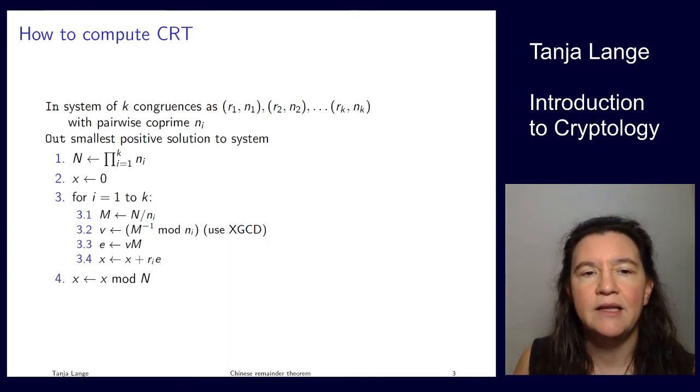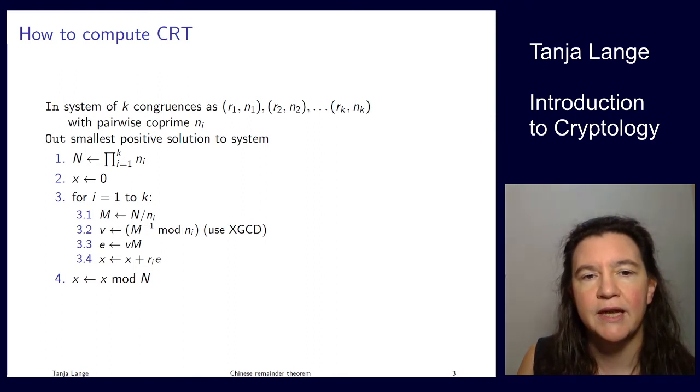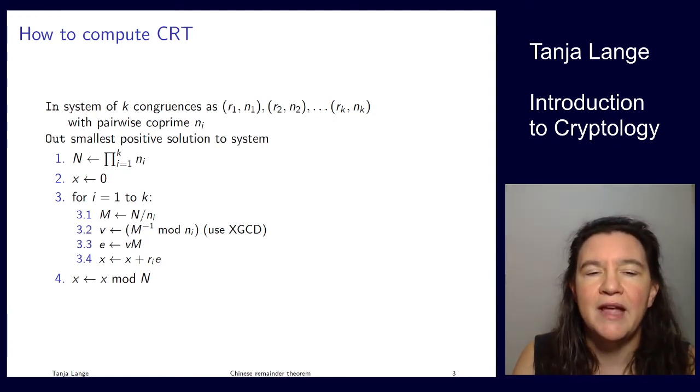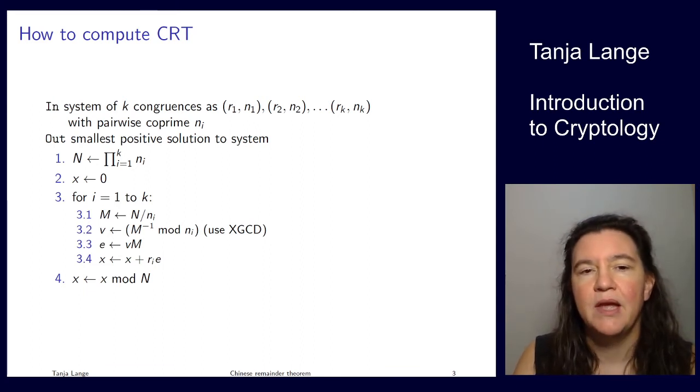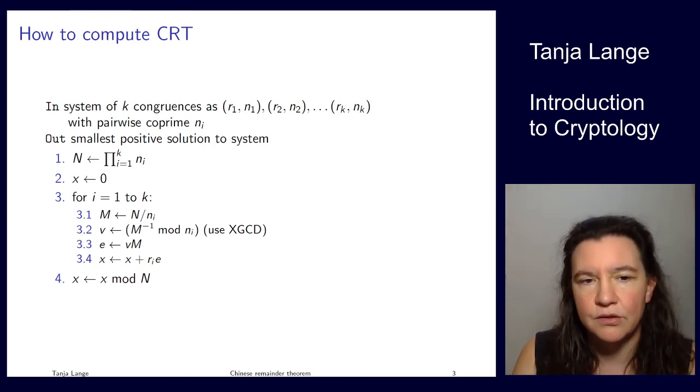Then we're adding this e to the intermediate value x—x will contain our solution at the end—and we're multiplying it by r. Now, if we're looking modulo nᵢ at this x, then every M will contain the nᵢ as a product factor, except for the one which we're currently looking at. At that point, we're getting that e ≡ 1 mod nᵢ, and so the x at that point is congruent to rᵢ times e, so congruent to rᵢ. This is the solution.